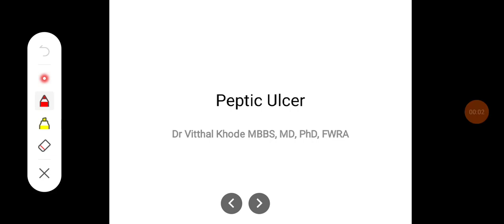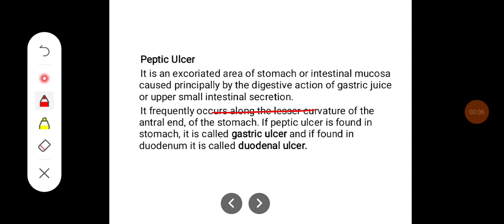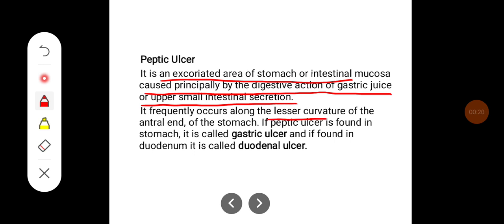Hello everyone. In this class we learn about Peptic Ulcer. Peptic ulcer is an excoriated area of stomach or intestinal mucosa caused principally by digestive action of gastric juice or upper small intestinal secretion. It frequently occurs along the lesser curvature of the antral end of the stomach. If peptic ulcer is found in the stomach, it is called gastric ulcer, and if found in the duodenum, it is called duodenal ulcer.